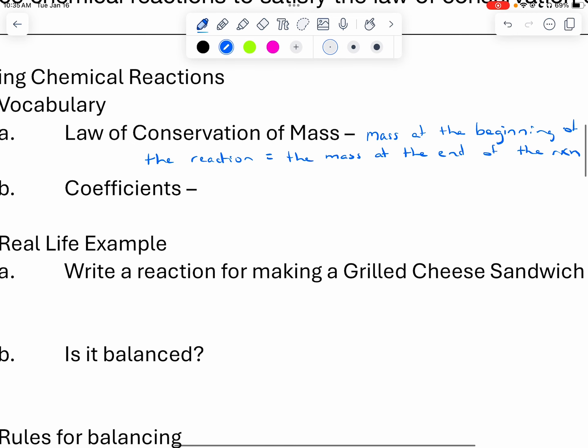Now our next and last piece of vocab is coefficients. Coefficients are those big numbers up front - big numbers in front of substances. They represent moles and they are used to balance chemical equations. So they are what we use to balance chemical equations.